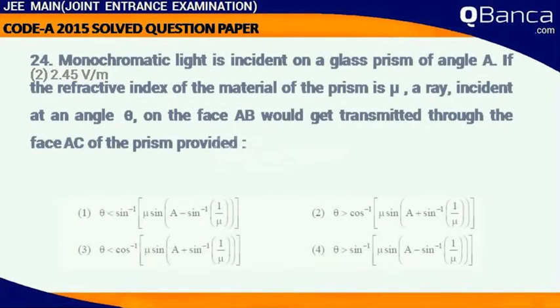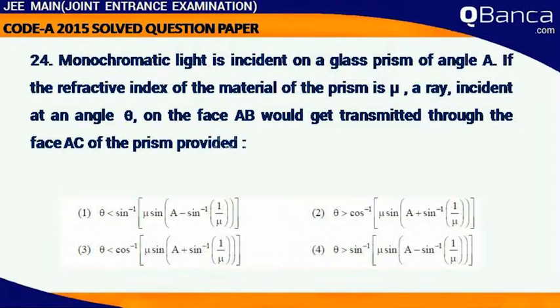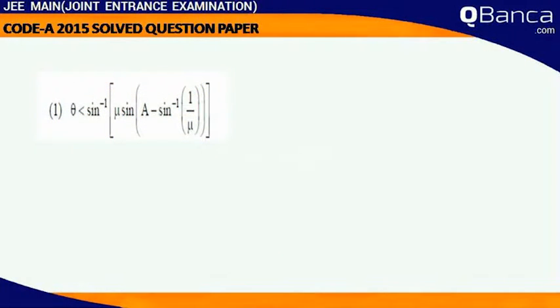Monochromatic light is incident on a glass prism of angle A. If the refractive index of the material of the prism is mu, a ray incident at an angle theta on the face AB would get transmitted through the face AC of the prism provided. Answer theta is less than sine inverse of mu sine of A minus sine inverse of 1 by mu.